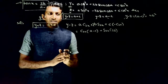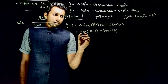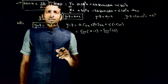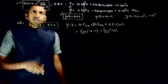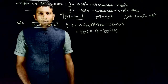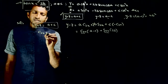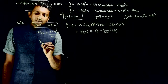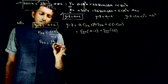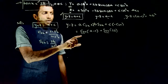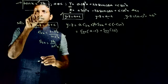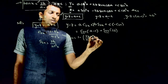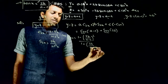Now I have to completely convert this in terms of a, b, and c. We need to convert cos 2x and sin 2x using the information about tan x. If you know tan x, you can find sin 2x and cos 2x using the formulas: cos 2x equals (1 minus tan²x) divided by (1 plus tan²x), and sin 2x equals 2 tan x divided by (1 plus tan²x). So cos 2x equals (1 minus (2b/(a-c))²) divided by (1 plus (2b/(a-c))²), which gives ((a-c)² minus 4b²) divided by ((a-c)² plus 4b²).